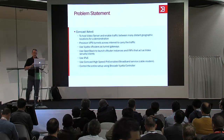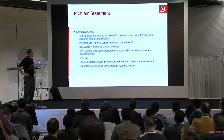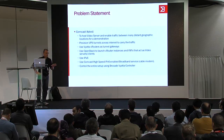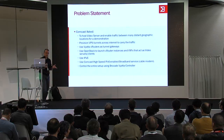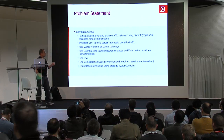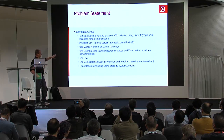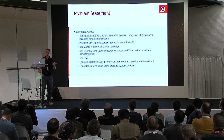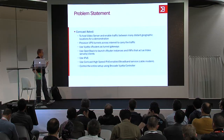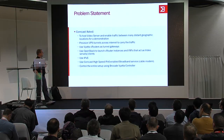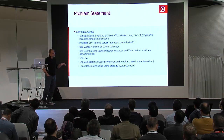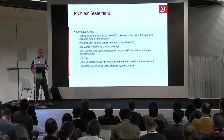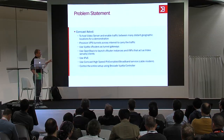We have a use case where Comcast has multi-site video distribution, and they wanted a dynamic and flexible way to position video servers. The solution is to provision VPN tunnels not only inside of the Comcast network, but also to show that this can work for extranet capability — for example, if they wanted to use a cloud provider to go off net. We also used a demo high-speed broadband access trial that Comcast has going on right now to connect one leg of the demo.